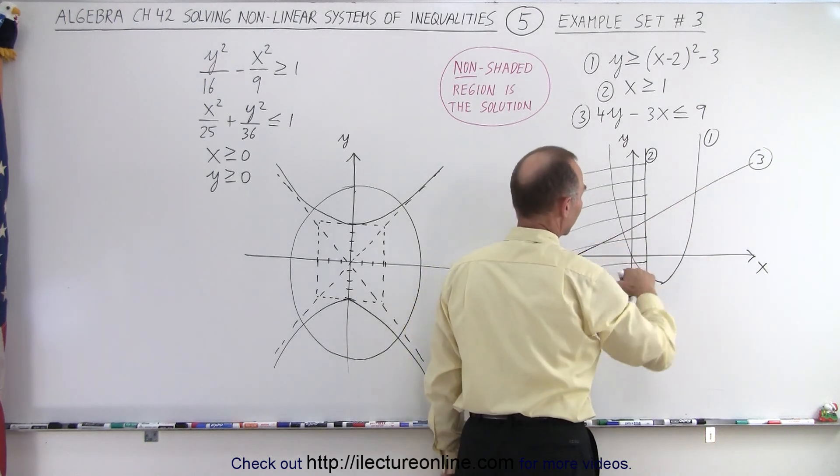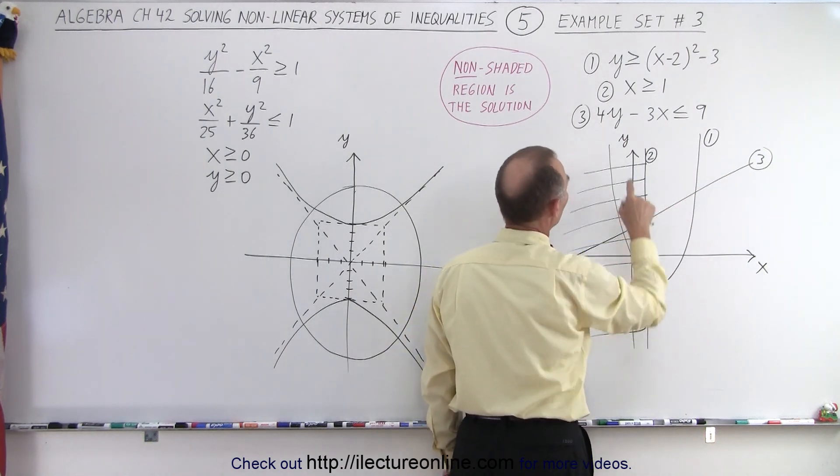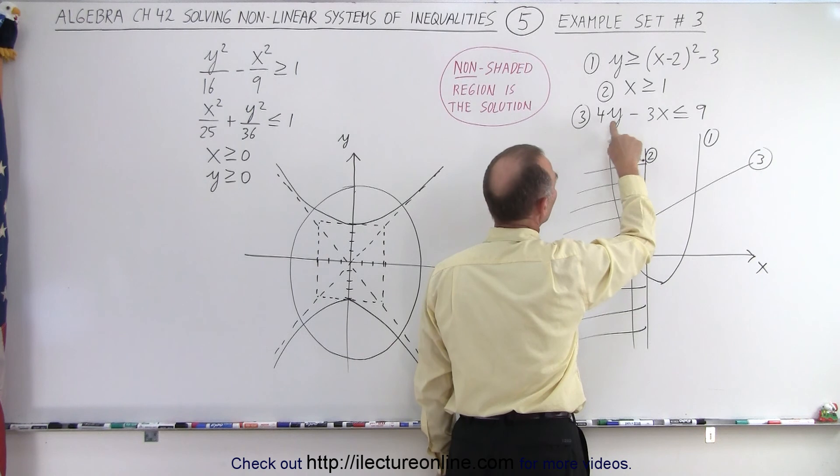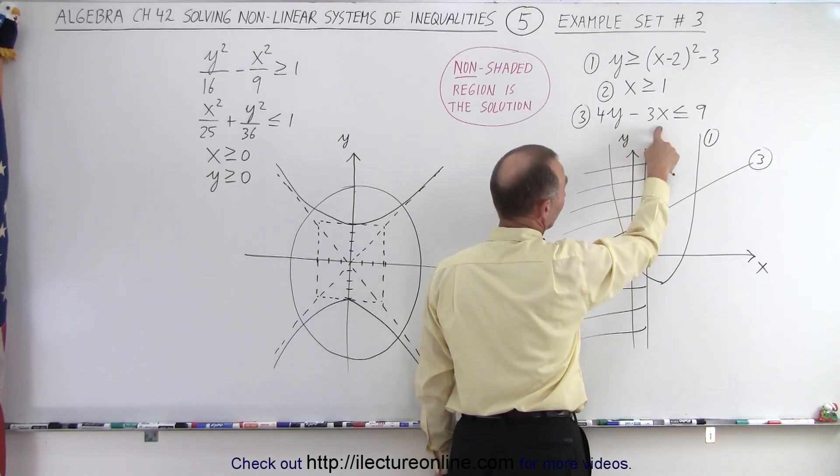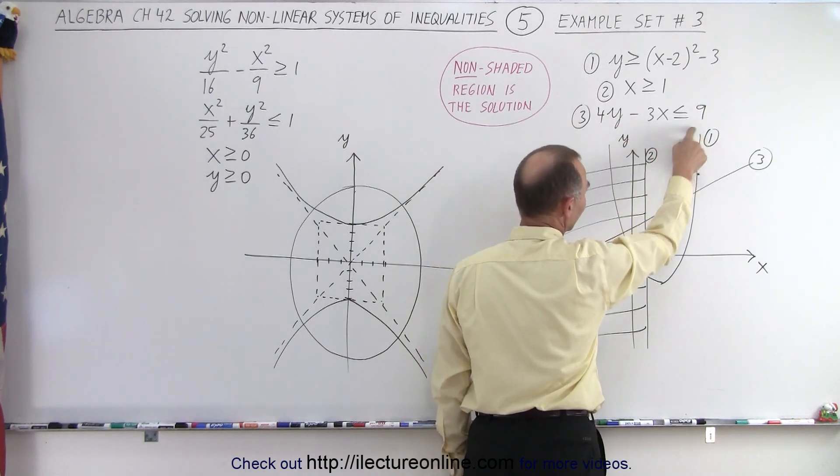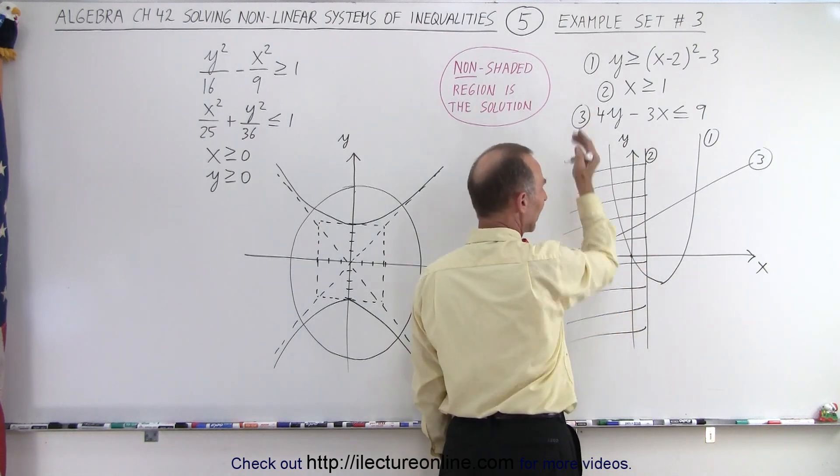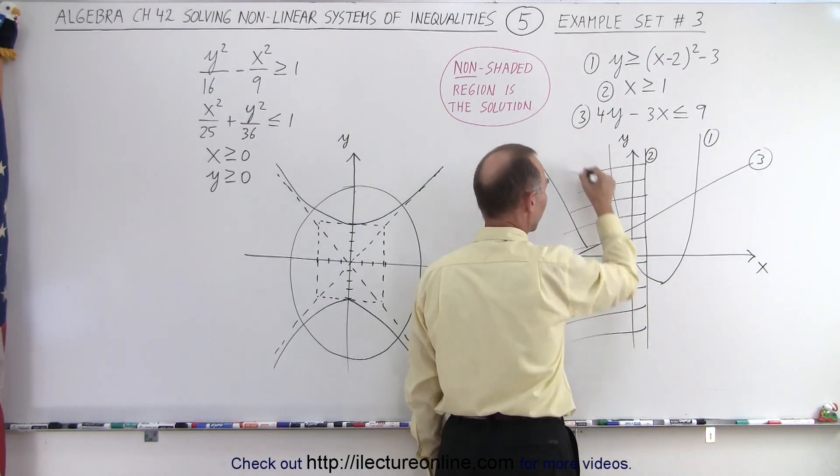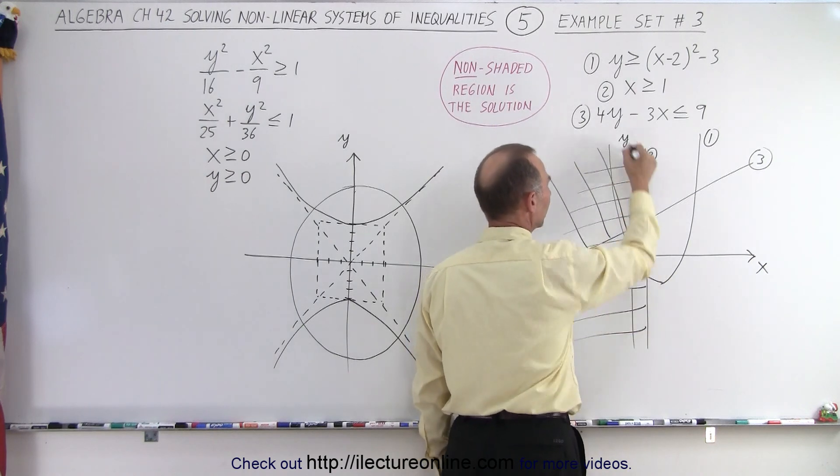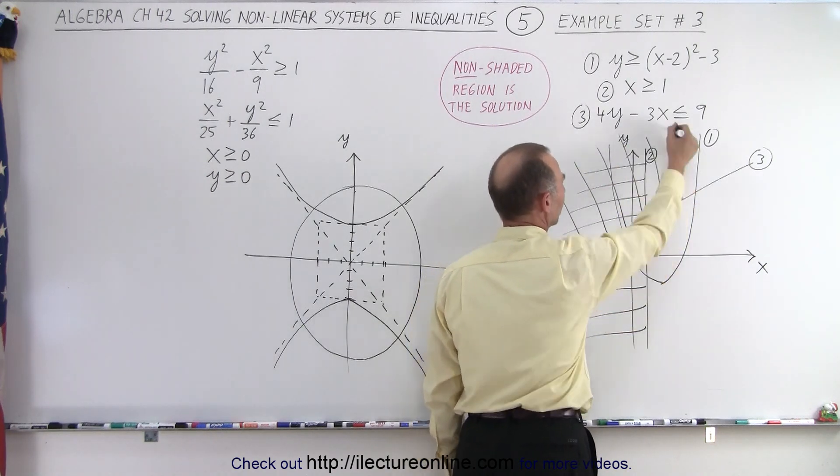Now let's go for this line right here. Again, we pick the point zero, zero, plug in zero and zero is zero minus zero, which is still zero, less than nine. The answer is yes. That means that below this line is part of the solution. Above the line is not part of the solution. So we go ahead and get rid of everything above that line, which is not part of the solution.